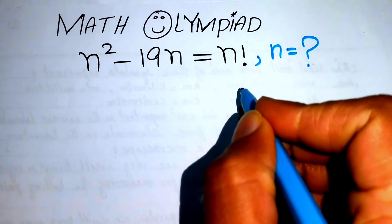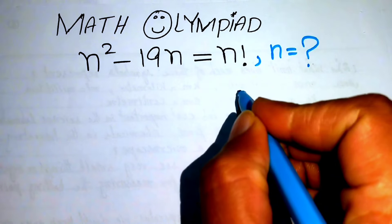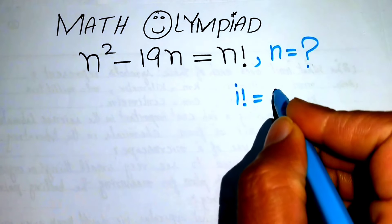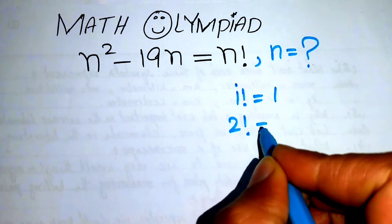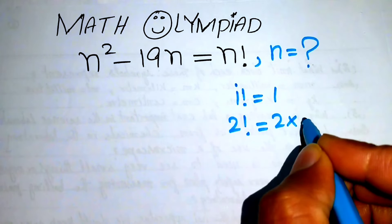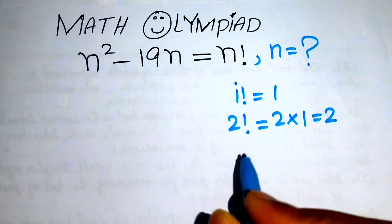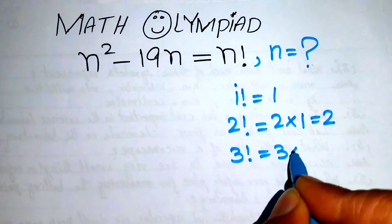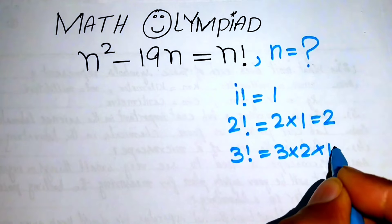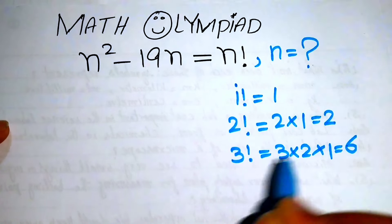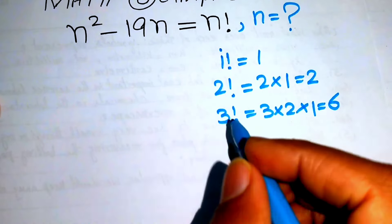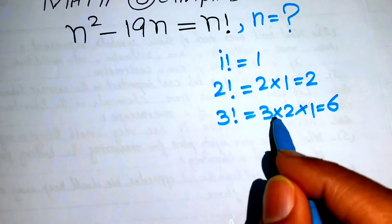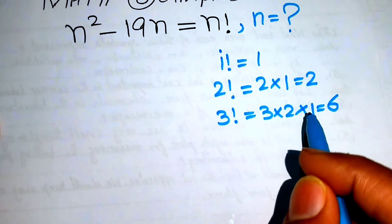If we have 1 factorial, we write it as 1. If we have 2 factorial, we write it as 2 times 1, which equals 2. If we have 3 factorial, we write it as 3 times 2 times 1, which equals 6. In factorial, we decrease by 1 and multiply all the terms down to 1.